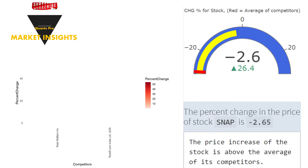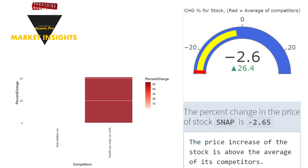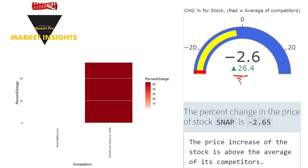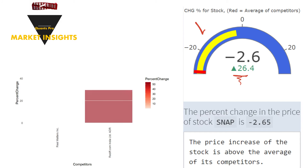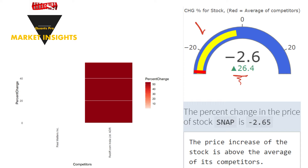First, let's talk about the price change compared to competitors. The percentage change in the share price is extremely important when considering competitors. The investor monitors the stock's movements compared to competing performances and shapes their investment decisions accordingly. In the gauge chart, the price change of the stock on the last trading day is compared with its competitors. The yellow color shows the daily percentage change in the share price; the red color gives the average of the percentage price changes in competitor shares.